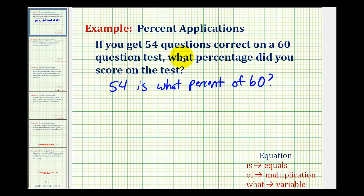And now that we have the question written as a basic percent question, we can form the percent equation using our keywords as we see here below. So our equation will be 54 is - represents equals - what or what percent represents our unknown. And since we are solving for a percent, I'm going to use the variable p. Of means multiplication and then we have 60.